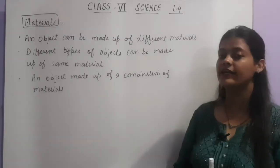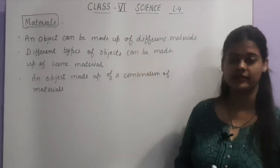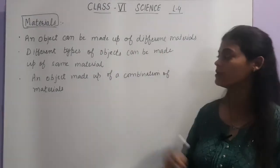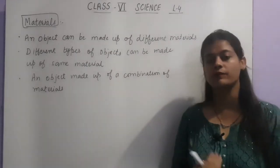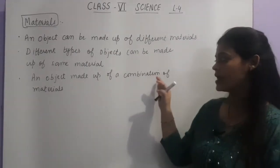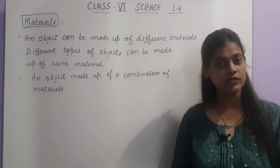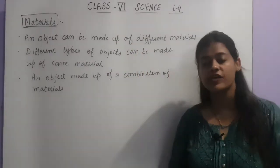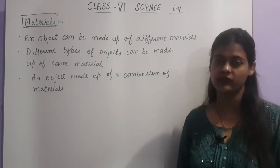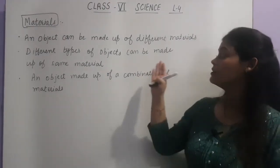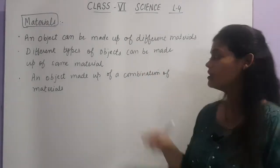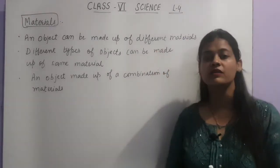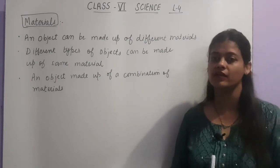The next topic is related to materials. We have three categories. First, an object can be made up of different materials. Second, different types of objects can be made up of the same material, or an object made up of a combination of materials. In the first case we will discuss how an object can be made up of different things; in the second, how different objects can be made up of the same material; and in the third, how an object can be made by a combination of materials. We will take each up one by one with examples and activities.